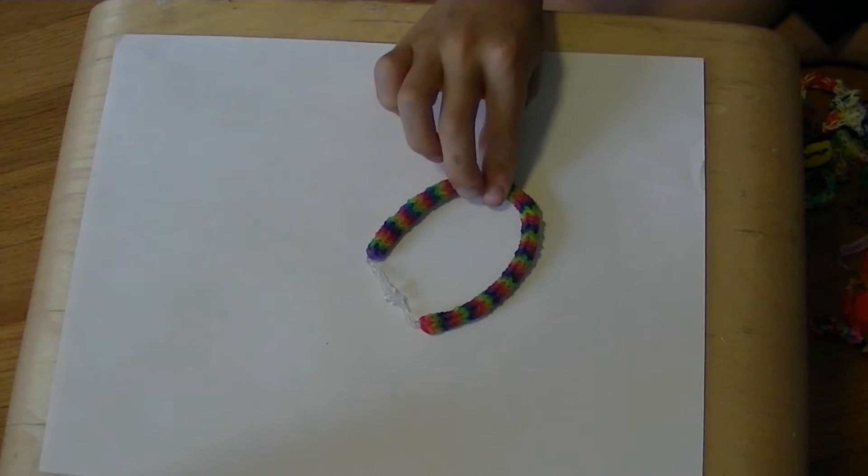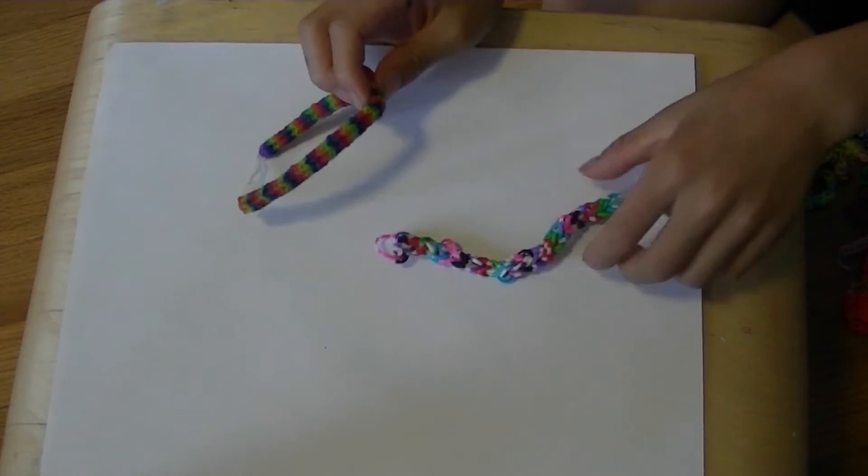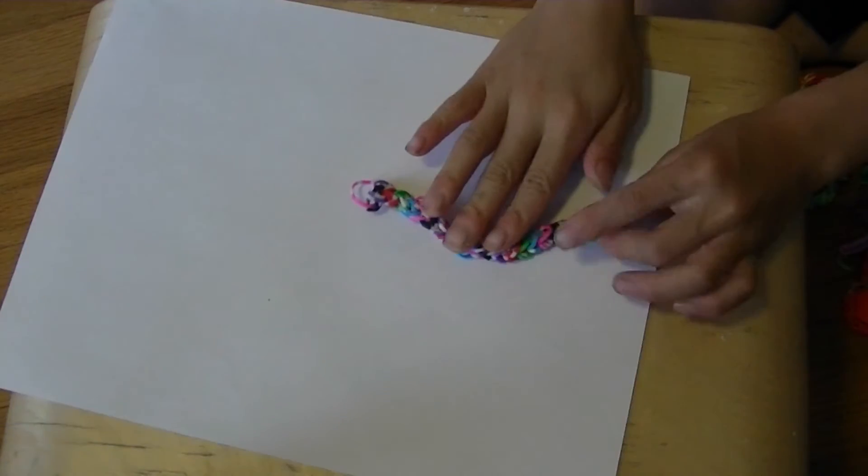This is a quadfish. This is a quadfish. This is a double single, it's not a fish tail. This is the shuffle bracelet.